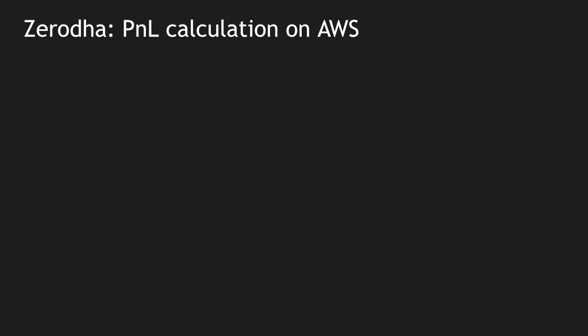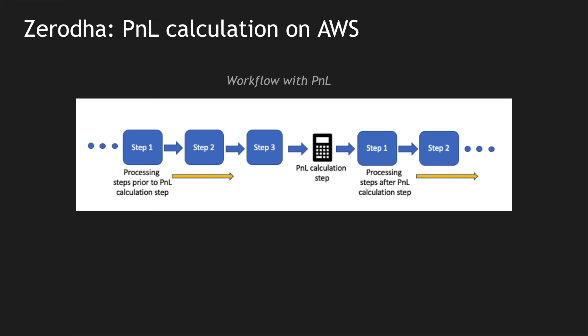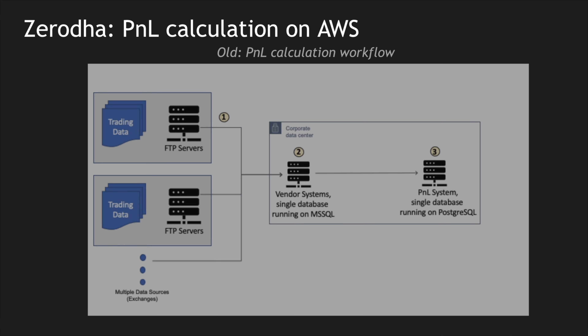One of the workloads mentioned in their article is the profit and loss — P&L — calculation. This P&L calculation works on a typical workflow with multiple steps. Zerodha processes records through several steps before doing the P&L calculation — these could be filtering, adding customer information, or mapping reference information. There are three different steps before the P&L calculation, and after the calculation there is again a sequence of post-processing steps to filter data based on value or fields.